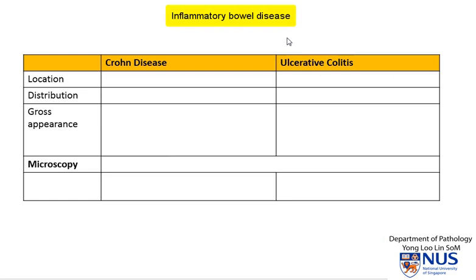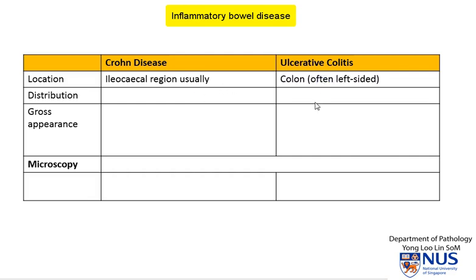The other main entity among the inflammatory bowel diseases is ulcerative colitis, and there are some key differences between Crohn's disease and ulcerative colitis. In terms of location, Crohn's disease often likes to situate itself in the ileocecal region; however, it can also involve the colon alone, but in a minority of cases. In ulcerative colitis, the colon is pretty much always involved and it tends to favor the left-sided colon — the region of the rectosigmoid colon — but it can also involve the right-sided colon.